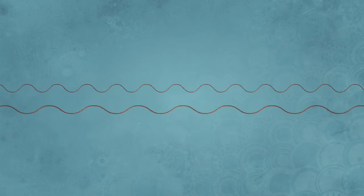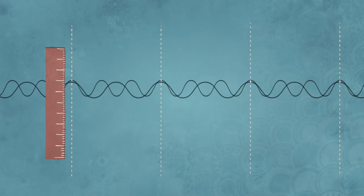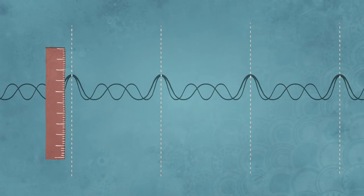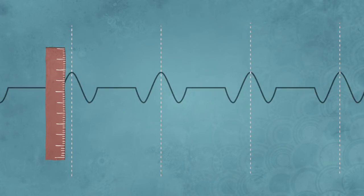When we add two waves, we find that there are places where the peaks line up, making a bigger wave, and other places where the peaks of one fill in the valleys of the other. The result has regions where we see waves separated by regions of nothing at all.